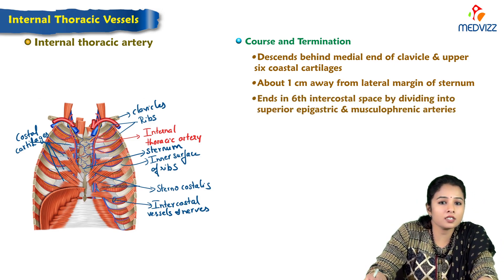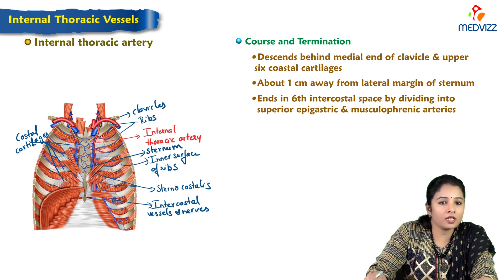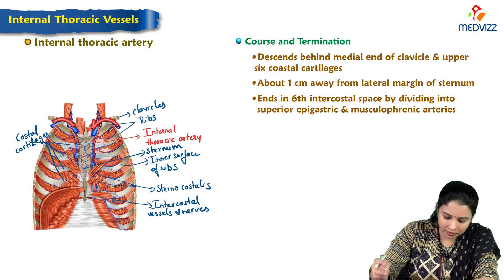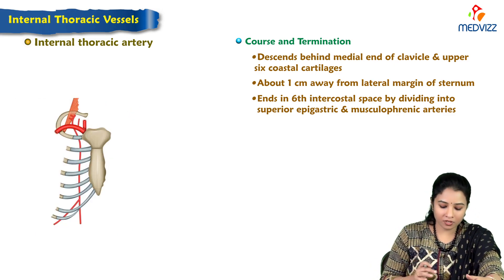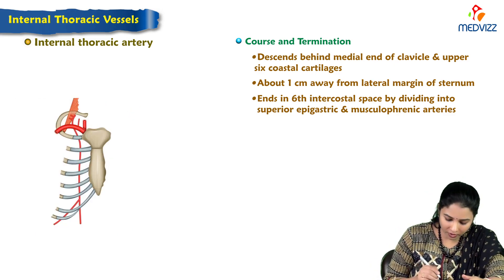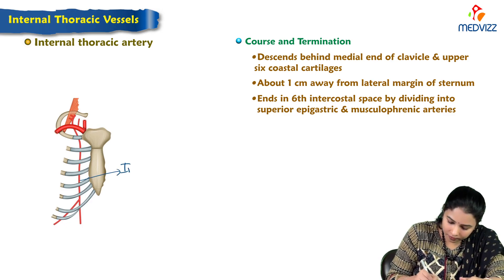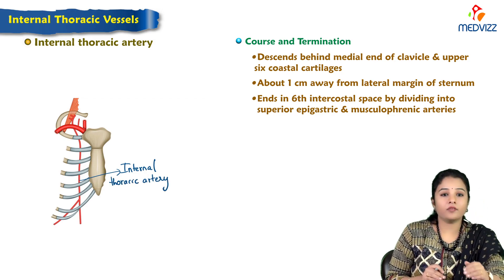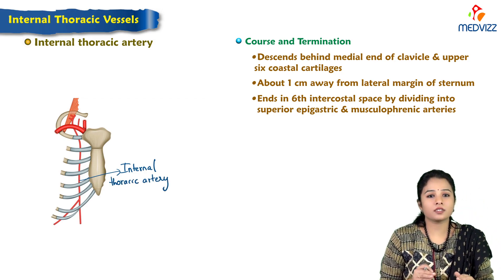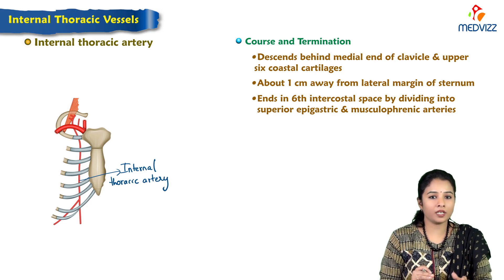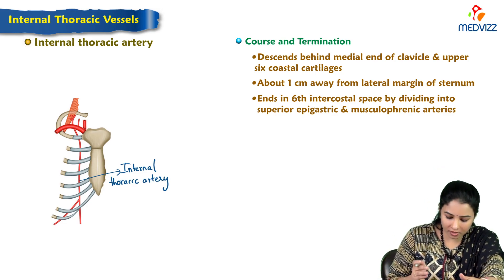It ends in the sixth intercostal space by dividing into the superior epigastric and musculophrenic branches. The schematic image helps us understand this division better, showing the internal thoracic artery dividing into these two terminal branches.